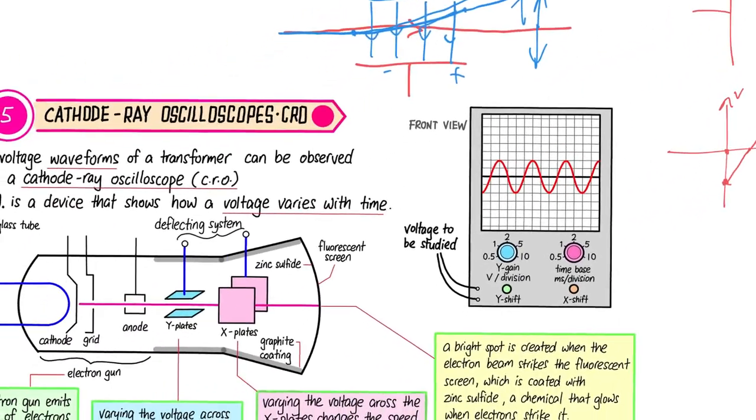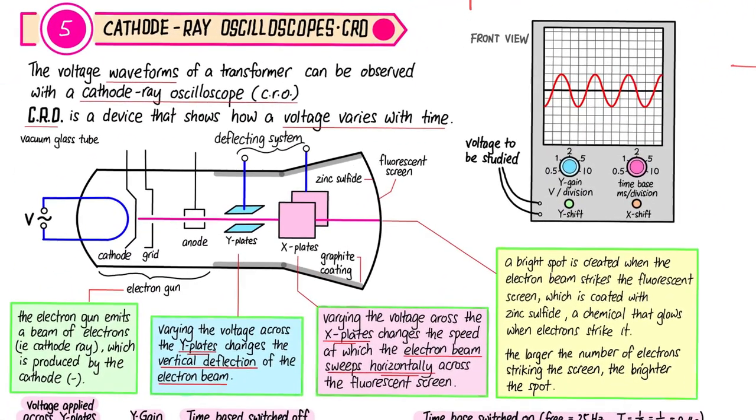So now I hope you roughly have an idea of the components of a CRO, and especially the deflecting system, how it causes the beam to be deflected and you get that kind of waveform on the screen.